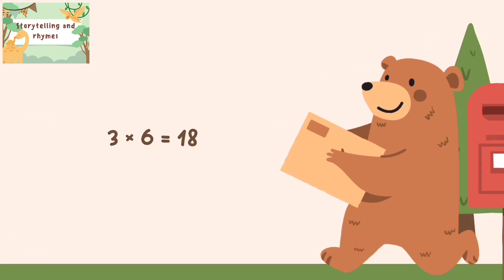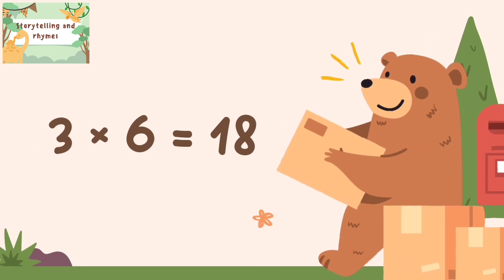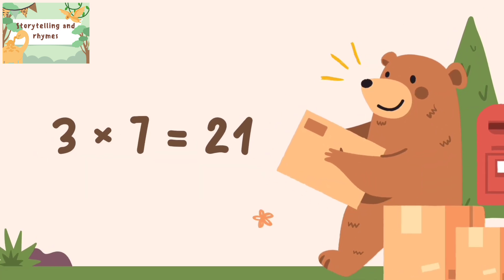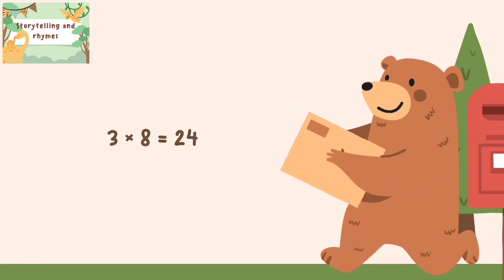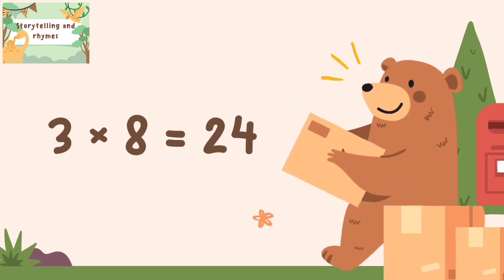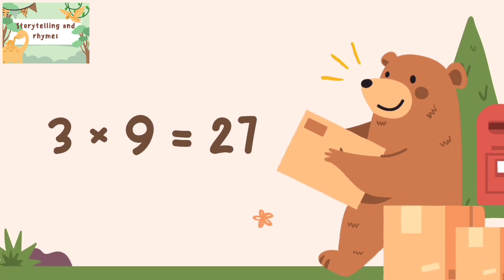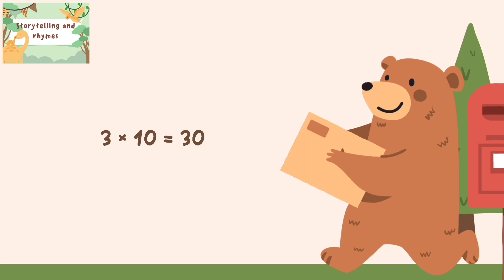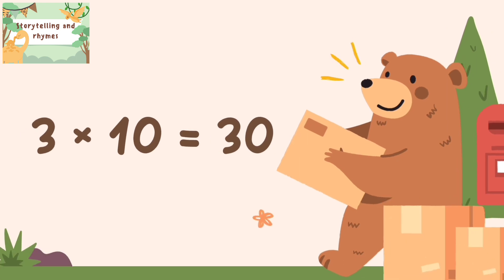3 six's are 18, 3 seven's are 21, 3 eight's are 24, 3 nine's are 27, 3 ten's are 30.